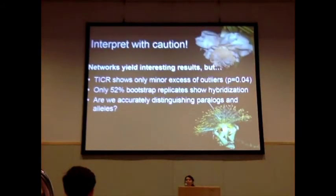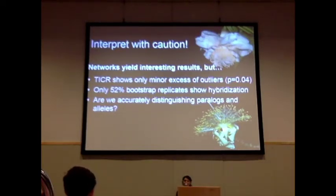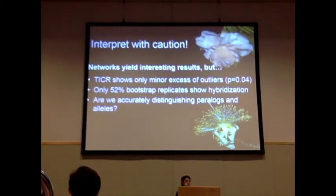I do have some words of caution for biologists using these approaches. First, these networks can yield very interesting results, but the TIGR test only rejected a tree-like structure with only a minor excess of outlier quartets — so only very mildly rejecting tree-like structure. Second, our SNAQ hybridization event was only recovered in 52% of the bootstrap replicates — interesting, but perhaps not significant yet. Third, we can't be sure, at least not yet, whether we are accurately distinguishing between alleles and paralogous genes.